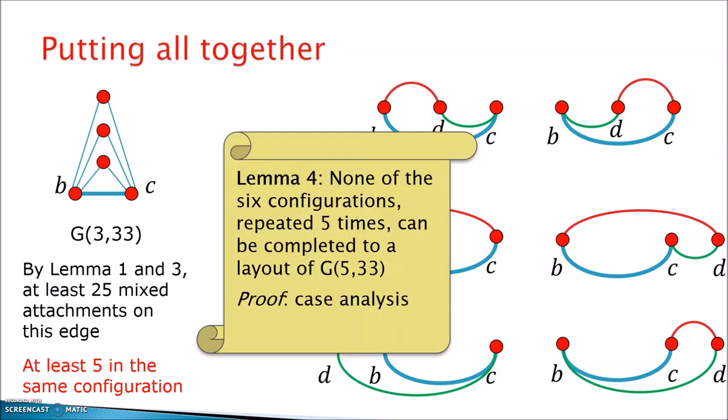And then you just need the proof that in each of these six configurations, if you have five with that configuration, then you cannot go up to G(5,33). Again, we do this with a case analysis. Again, we use the smiley face plus some other forbidden patterns that we identify to avoid a huge case analysis. So basically this covers everything and gives the complete proof of the counterexample.